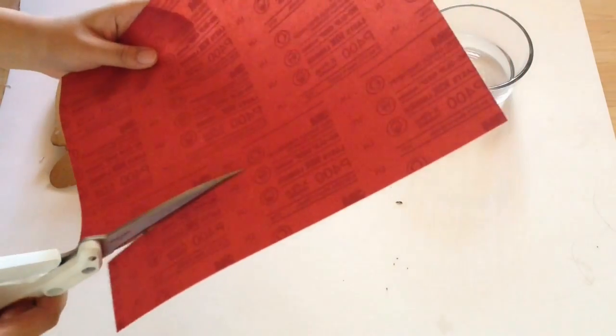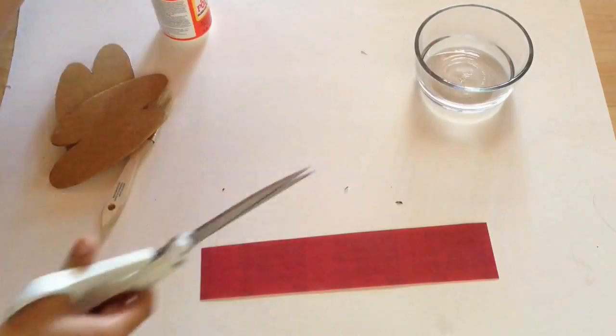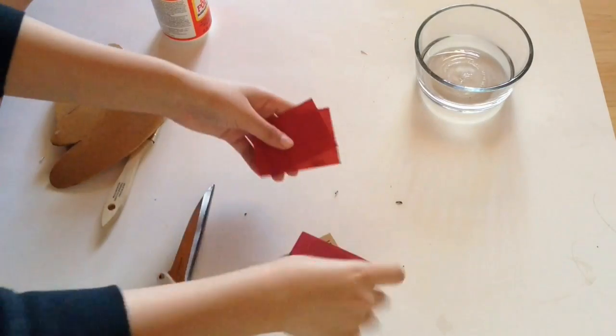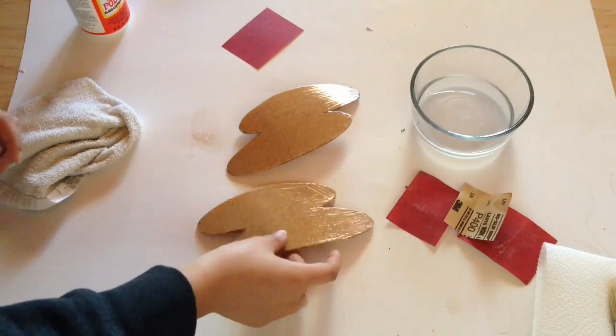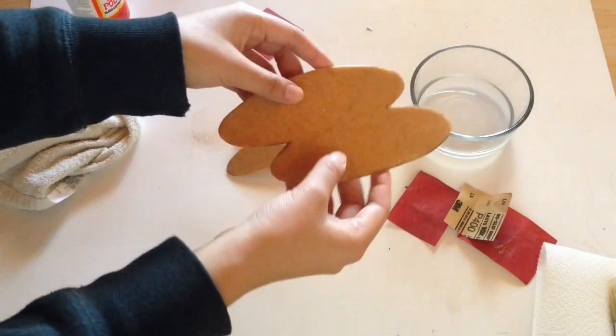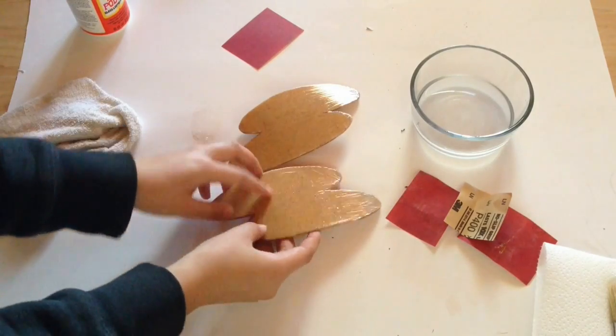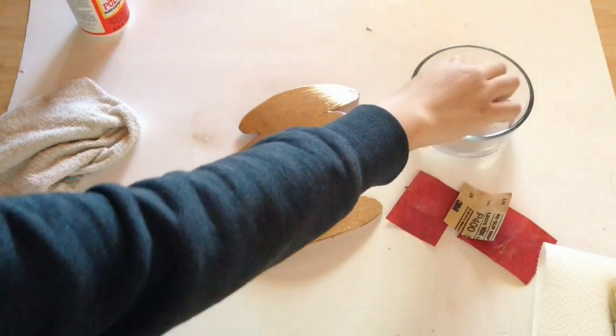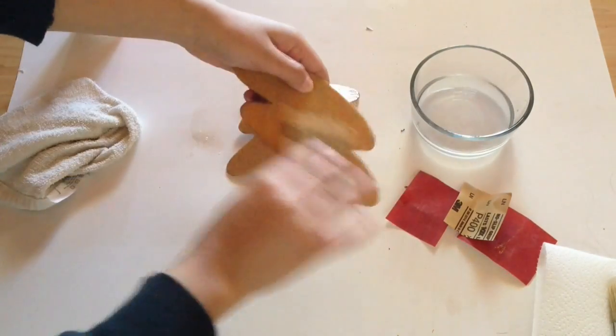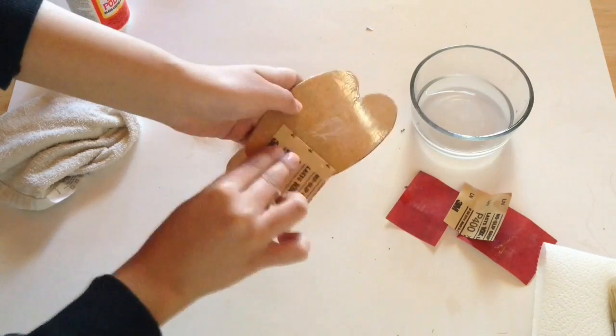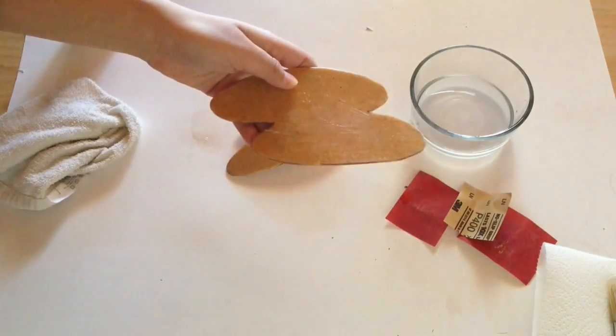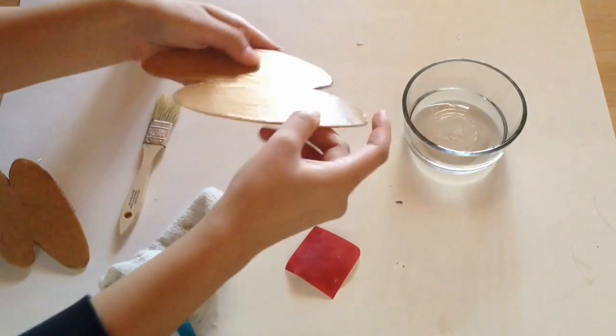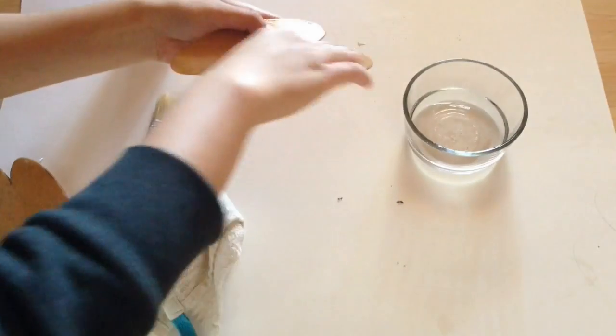While I wait for the Mod Podge to dry, I'm gonna cut some strips of sandpaper. You'll know when the Mod Podge is dry when it's all clear and it should leave some streaks on, so next we're gonna sand it down. Wet sanding leaves some residue on the armor, so I like to wipe it down with a damp cloth and get back to sanding.